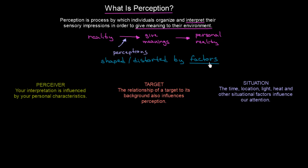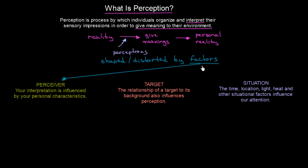We can classify these factors into three categories. The first one is going to be the perceiver. The second one is going to be the target. And the third one is going to be the situation. Let's think about the first category of factors that can shape or distort our perception of reality.